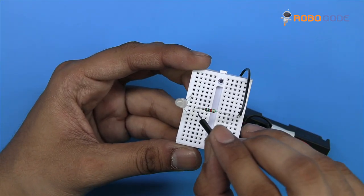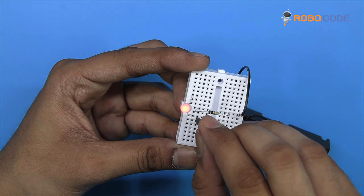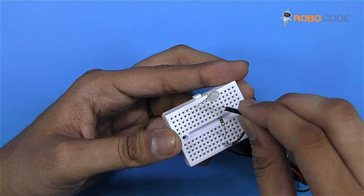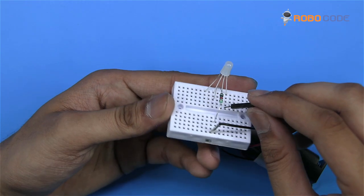Now take the red wire and connect it to pin 1 to see the red color. Similarly, connect it to pin 3 for green and pin 4 for blue.